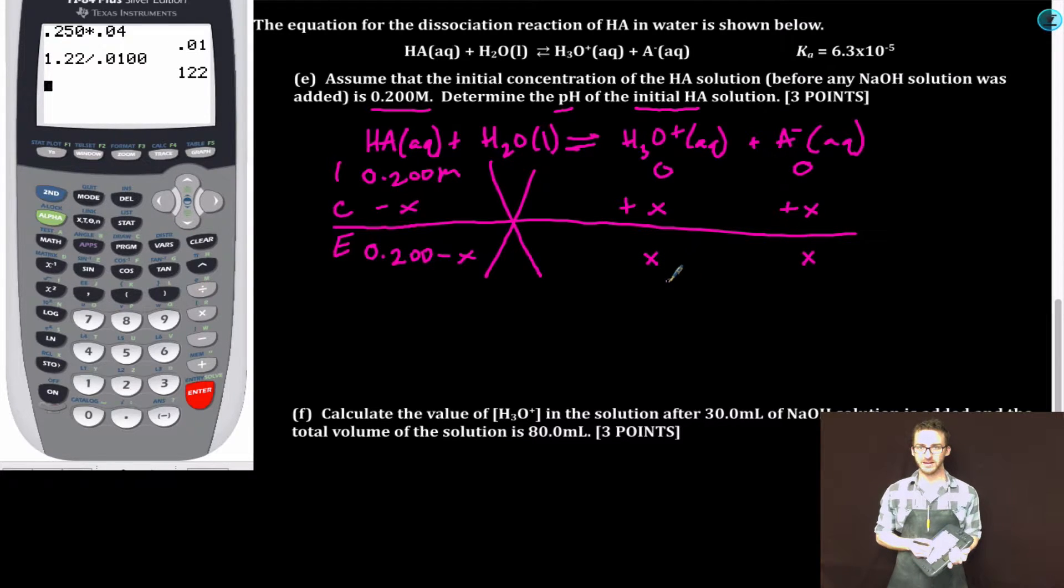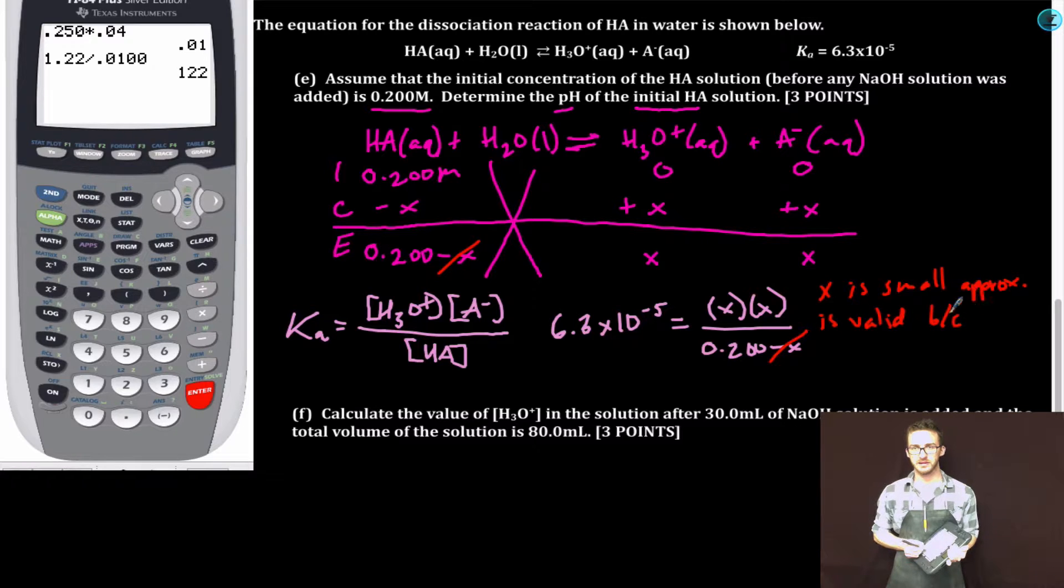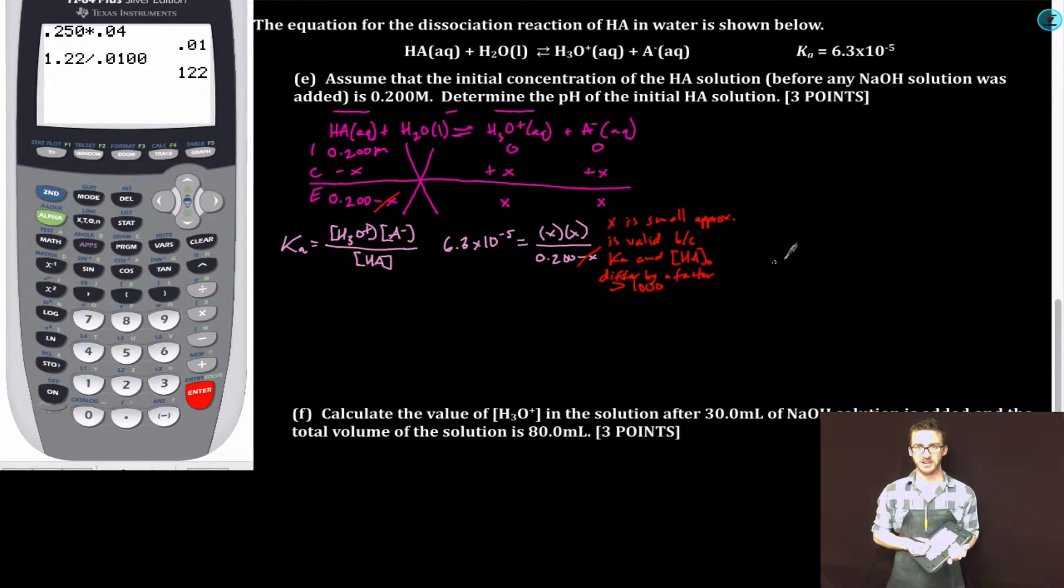Next, solve for X. To do that, we're going to use our Ka expression. Always, always, always write it out first in terms of the species in your equation. Next, we're going to plug in our Ka value and the equilibrium concentrations from our ice table. Importantly here, we're going to make the X is small approximation. I'm going to be very clear about this. I'm just not going to cross out the X. X is small approximation is valid because Ka and initial HA concentration differ by a factor greater than a thousand. Be clear about it. Now that is amazing because that will simplify our Ka expression to 6.3 times 10 to the minus 5 equal to x squared over 0.200.